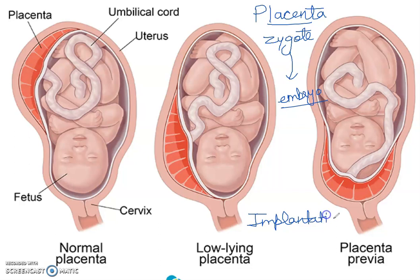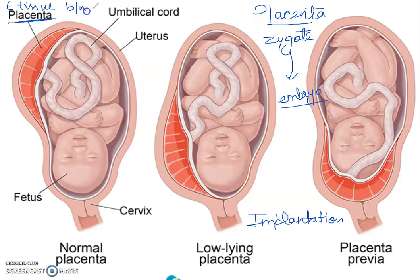The next thing is that placenta is a special tissue which is developed between the embryo and the uterine wall. This is the placenta — you can write that it is a tissue which develops between the embryo and the uterine wall.